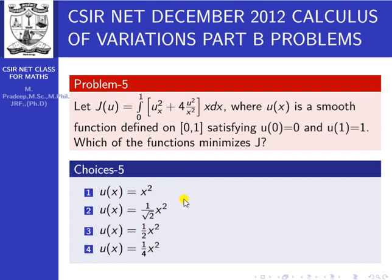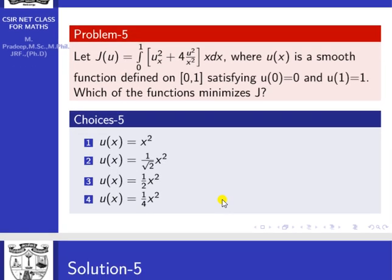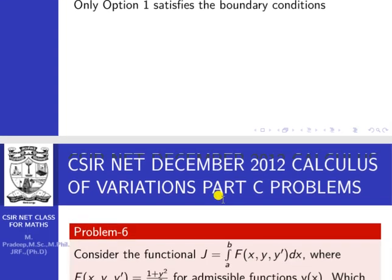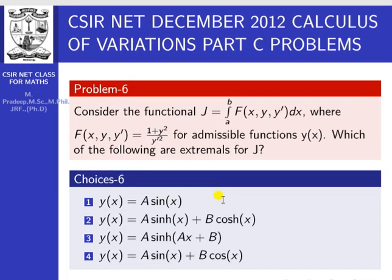This is the Part B problem. The next problem is Part C, December 2012. Consider the functional J equal to integral from a to b of F(x, y, y') dx, where F(x, y, y') = (1 + y²) divided by y'², for admissible functions y(x). Which of the following are extremals for J? The options are: y(x) = A sin(x), y(x) = A sinh(x) + B cosh(x), y(x) = A sinh(x) + B, and y(x) = A sin(x) + B cos(x).